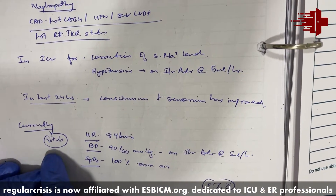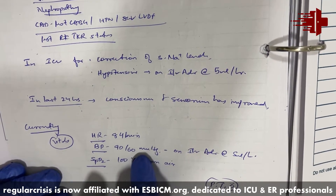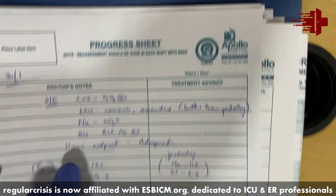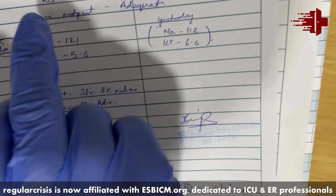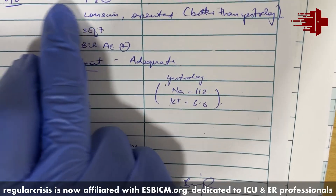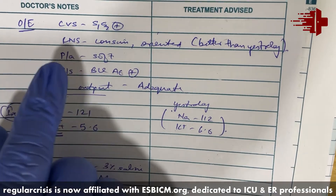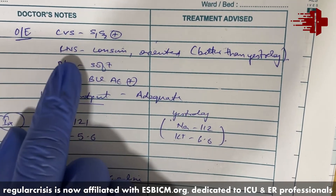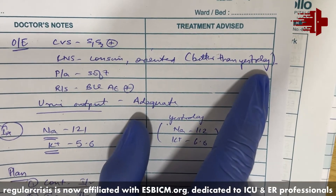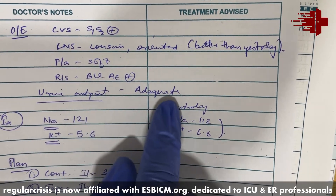Currently, the patient is hemodynamically stable: heart rate 84, vitals 90/60, and we are tapering the adrenaline. Saturation is fine. Because the patient is on adrenaline infusion, CVS is mentioned first in the system review. Otherwise, CNS would have come first since the primary complaint was altered behavior. CVS is fine. CNS: conscious, oriented, and better than yesterday. Other systems are written here and urine output is adequate.